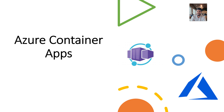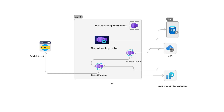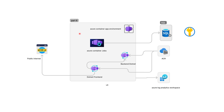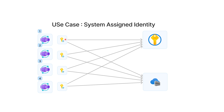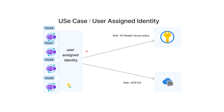Hi everyone, and welcome to a new session about Azure Container Apps. As you have seen, we have deployed the backend, frontend connected to a SQL database, Azure Container Registry, and also a Key Vault. We have used system-assigned identity in order to connect our resources to the Azure Container Registry and to the Key Vault. Every time we need to connect an app, we need to do two links: one for the Key Vault and one for the Azure Container Registry. Since we have four Azure Container Apps, it means multiple applications connecting to the same resources.